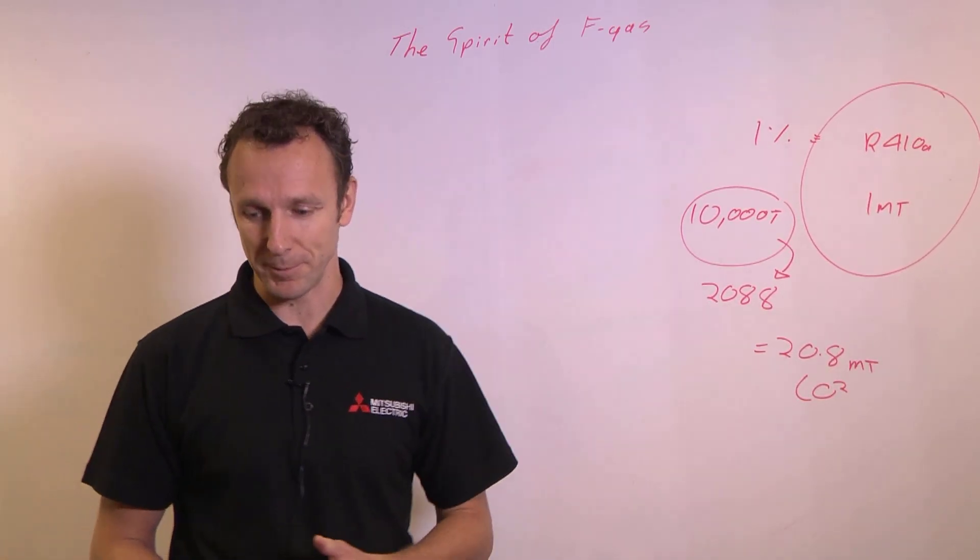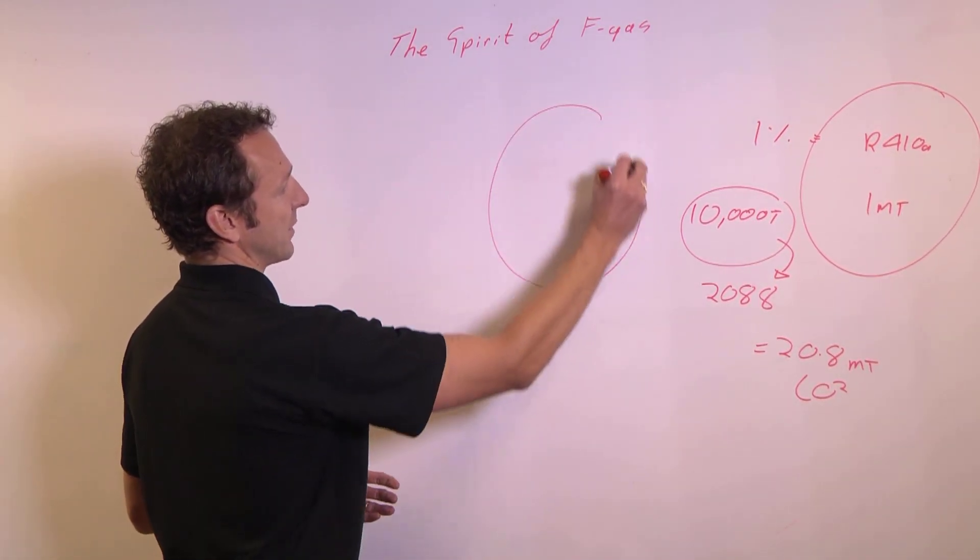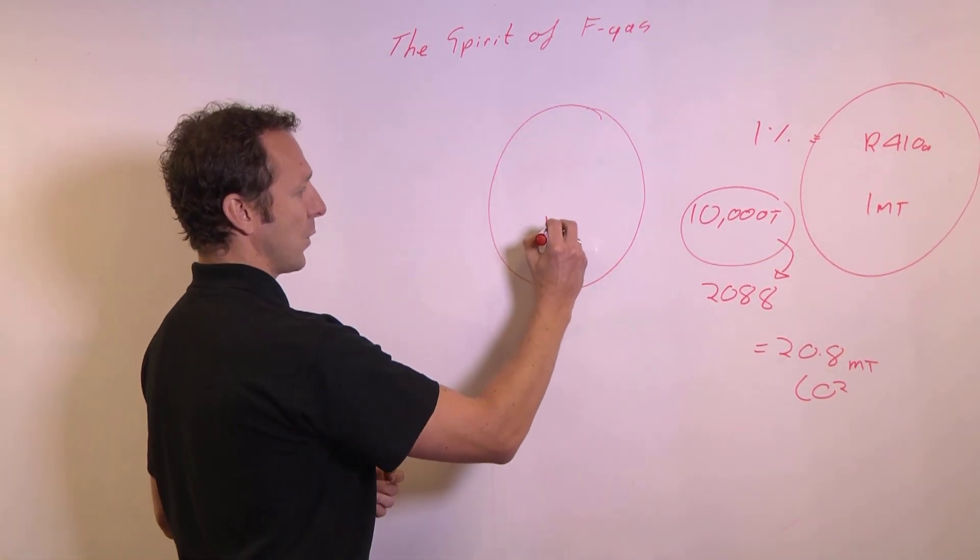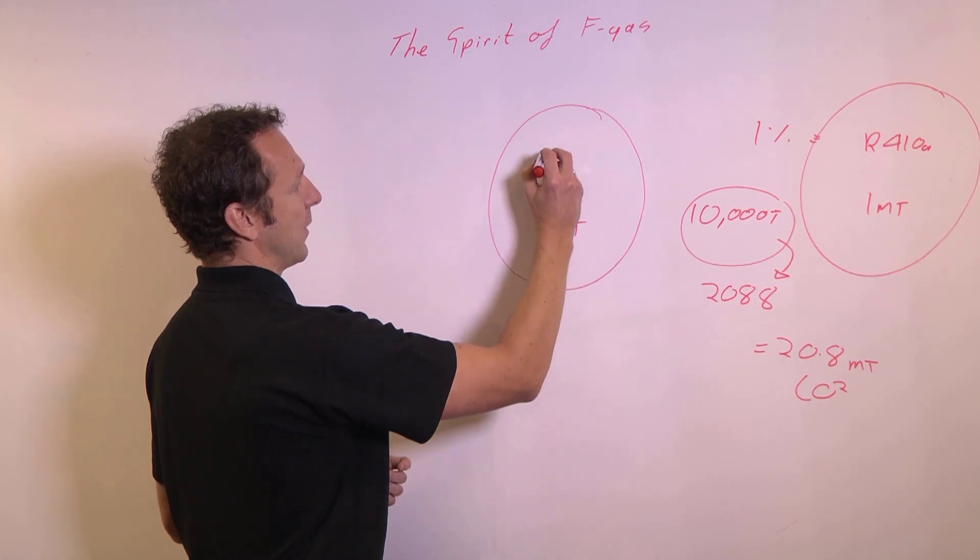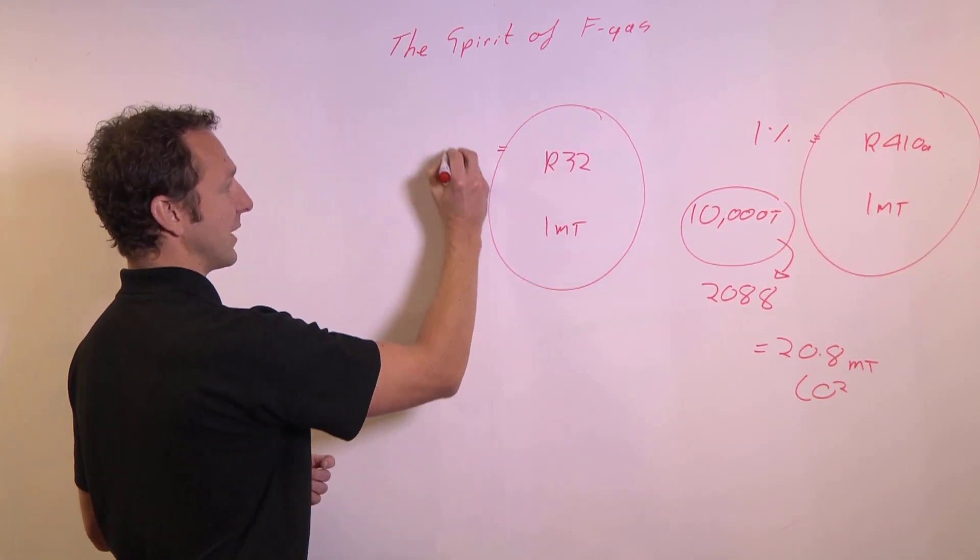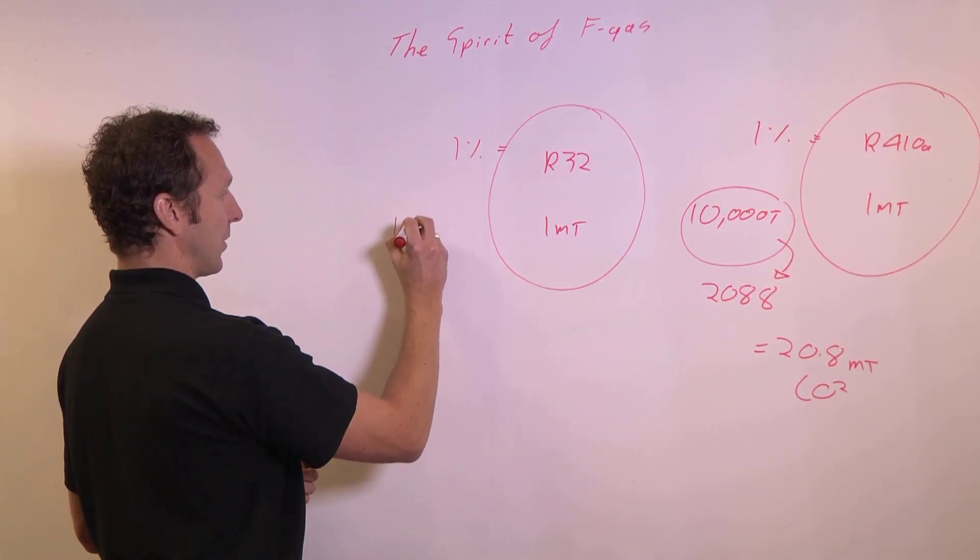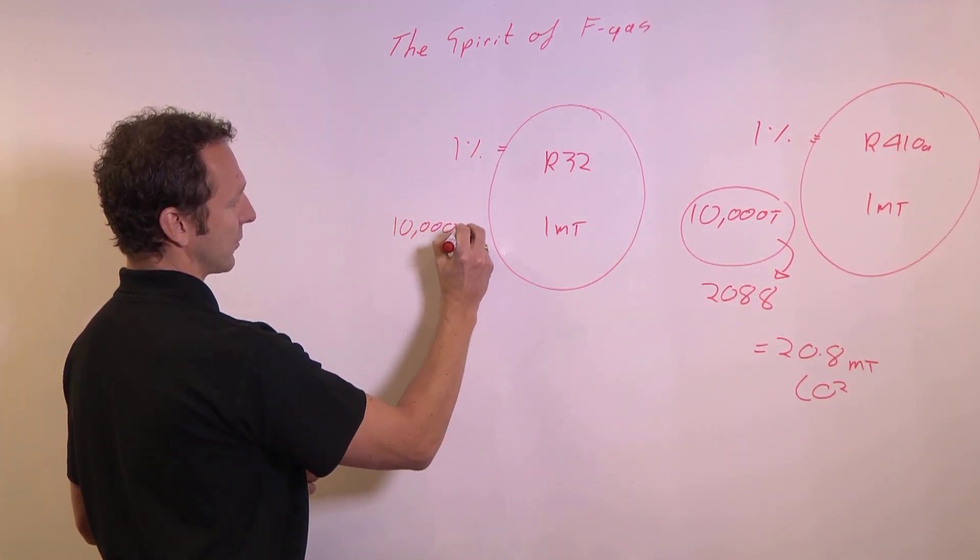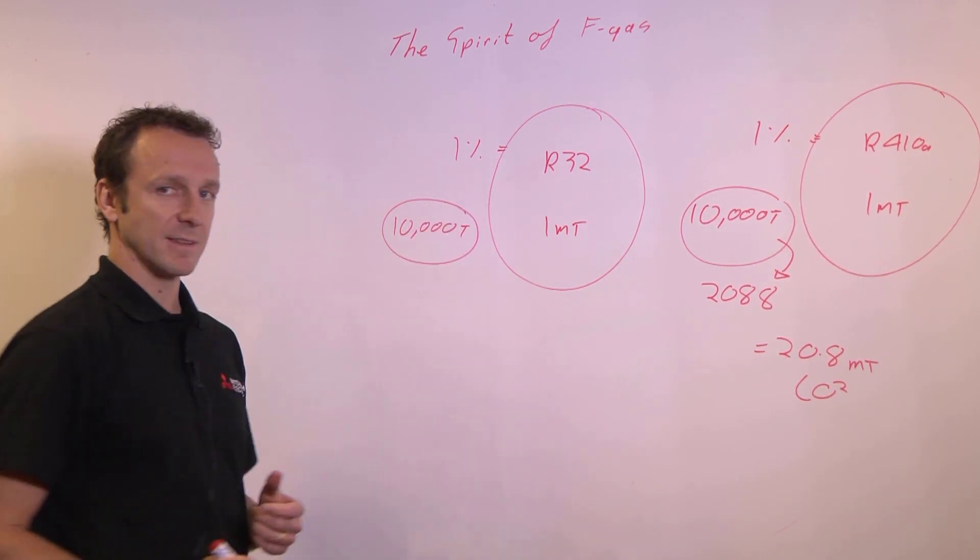So I'm going to draw another bubble. This bubble is again a representation of the UK market, one million tonnes of refrigerant. However, I'm using R32. Assume the same leakage rate for a level playing field, and I've got 10,000 tonnes of R32 being released into the atmosphere.